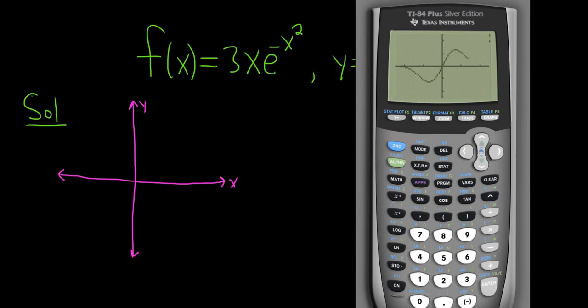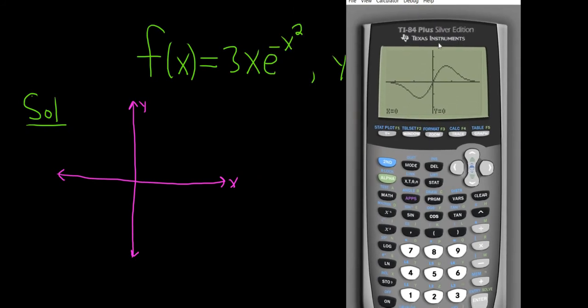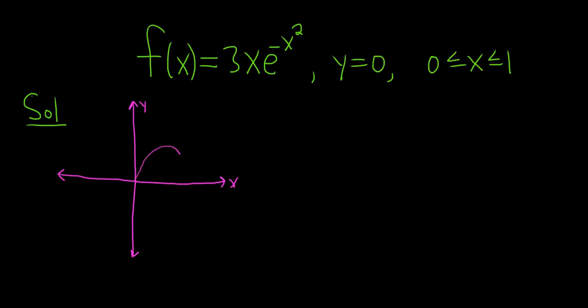And x varies from 0 to 1, so let me go ahead and attempt to graph that here on the screen. So it'll look something like this. And then here's 1, so basically we just want this region here. This is the region we want.